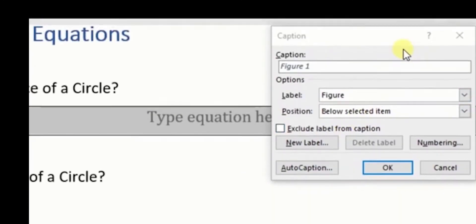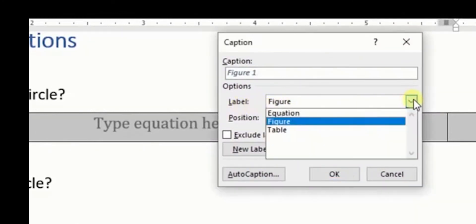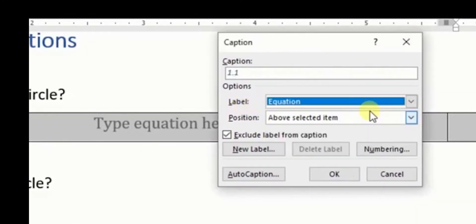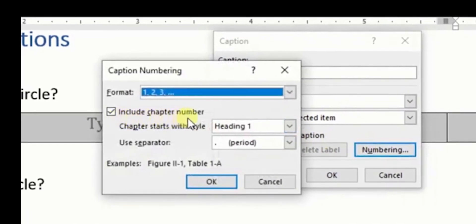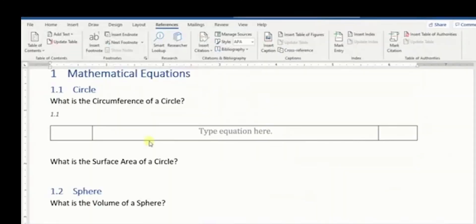For the equation number, we click on the third cell, then this time we go to references and select insert caption. Since we're working with equations, we're going to go to label and change it to equation. Make sure that 'exclude label from caption' is checked, and for numbering, make sure that 'include chapter number' is checked. Leave heading 1 and for use separator you can leave period. Click OK, then OK. Now you have the equation number.